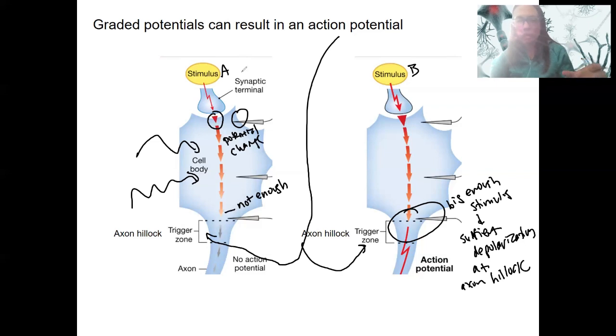At this point, I want you to know what a graded potential is, that they can vary in size depending on the stimulus strength, and they diminish over space. They only generate an action potential if depolarization is sufficient at the axon hillock.